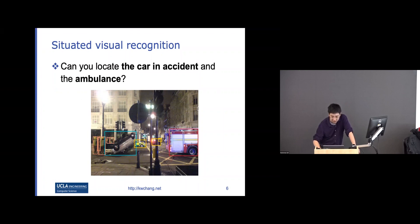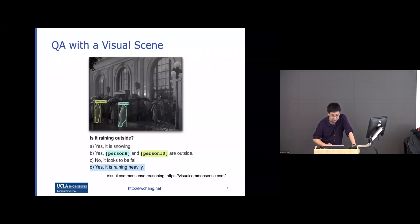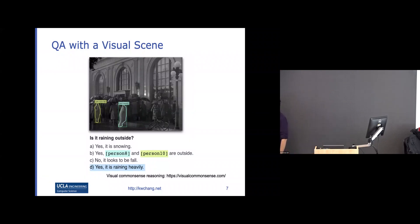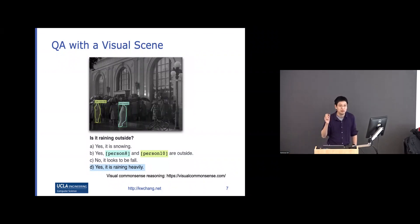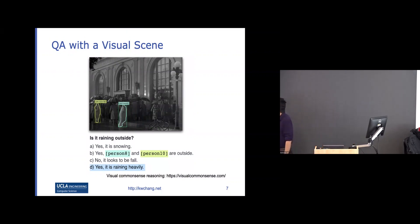Another example: if you want to answer 'is it raining outside?' the traditional way would be to identify raindrops, but these may not be visible in the image. However, if you know the association that when people carry an umbrella it's likely raining, you can use that to answer this kind of question.